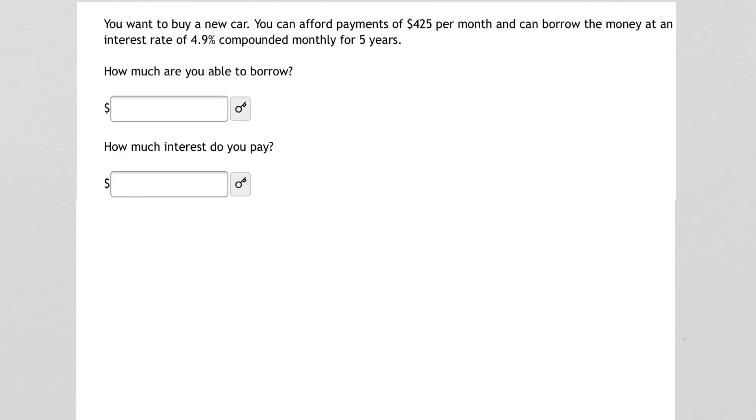You want to buy a new car. You can afford payments of $425 per month and can borrow the money at an interest rate of 4.9% compounded monthly for 5 years. How much are you able to borrow and how much interest do you pay?